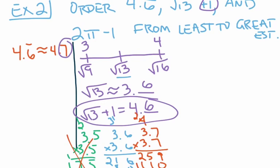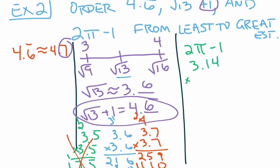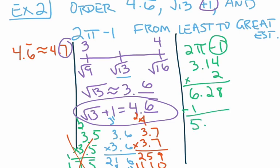Now I need to estimate 2π minus 1. Pi is approximately equal to 3.14, so 2 times 3.14 equals 6.28. From that I subtract 1 because of the minus 1, and I get 5.28.